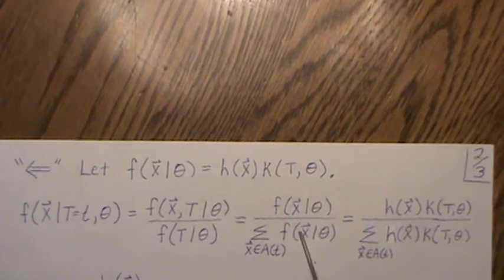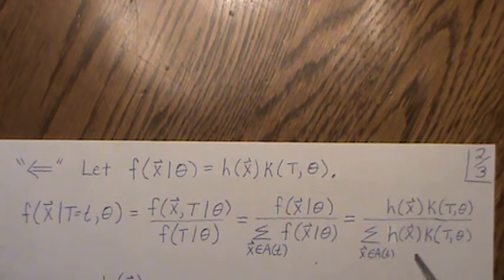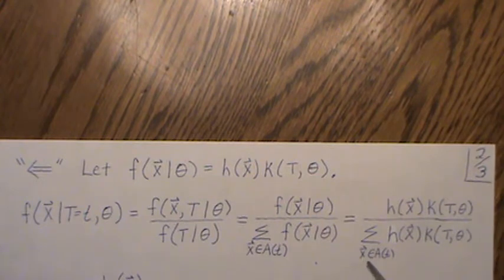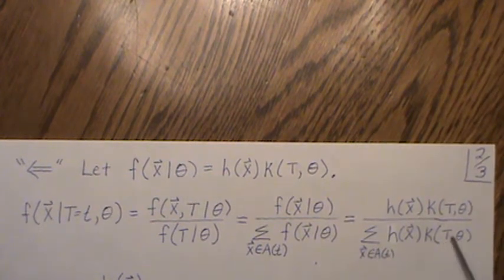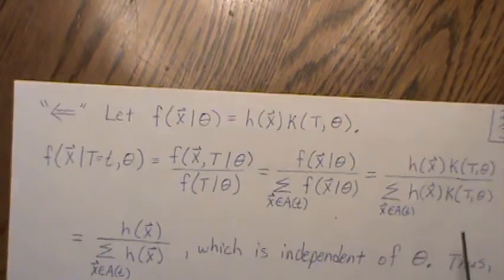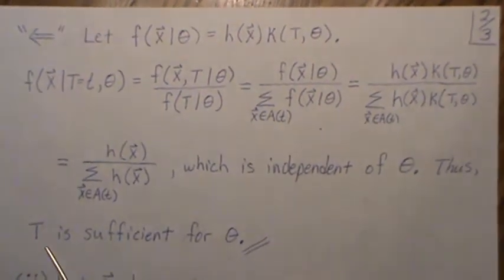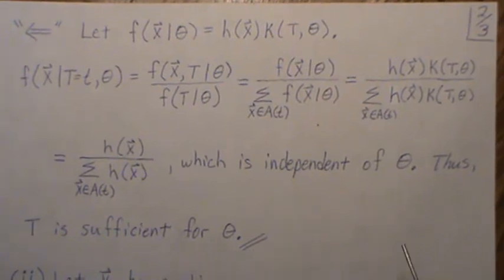Since the assumption is that the joint distribution factors, we factor both the numerator and the denominator into h of x times k of t and theta. The key step is that when x is in a of t, every combination of x makes capital T equal to little t, so k of t and theta is constant with respect to that sum. It can be factored out of the sum and then cancels with the k in the numerator. We're left with h of x divided by the sum of h over a of t. There's no theta here — this is independent of theta. Thus t is a sufficient statistic, and we've proved the discrete case.